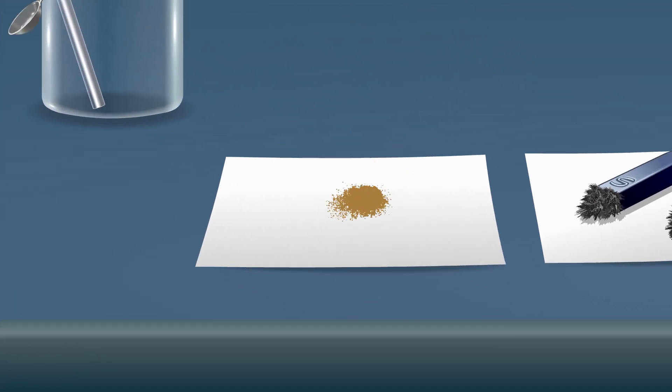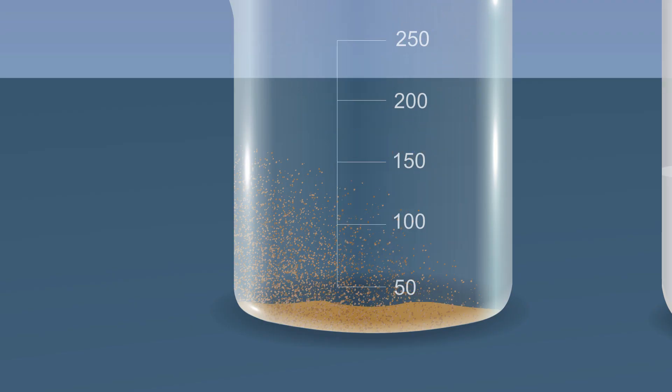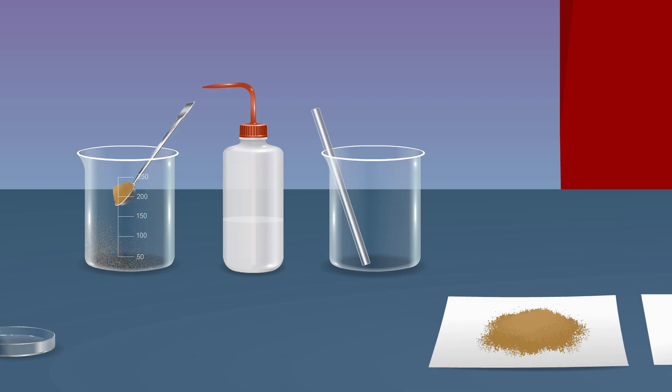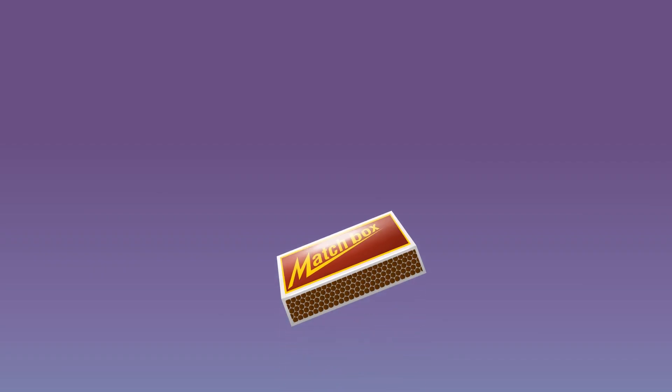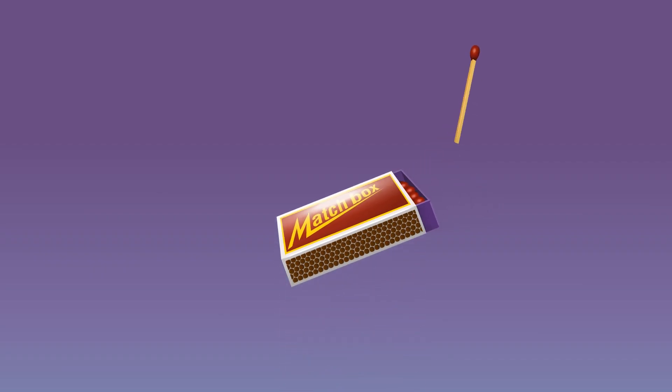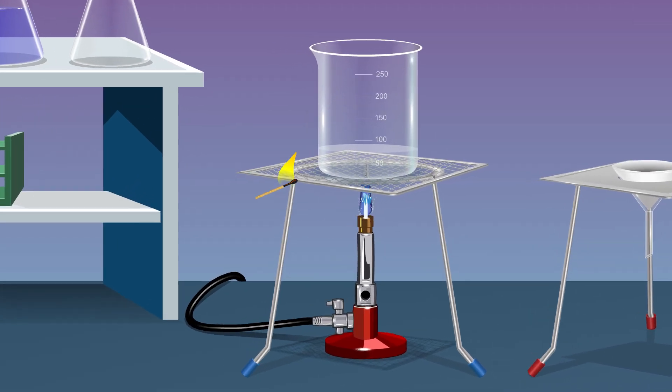Place the sand in the filter paper using a spatula. Place the filtrate containing beaker on the tripod. Turn on the burner and ignite the burner using a matchbox.